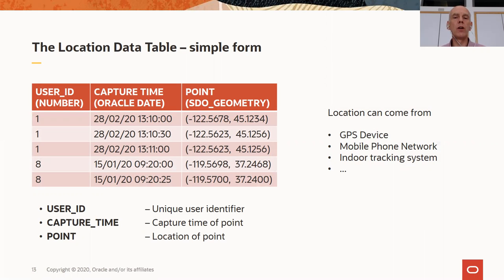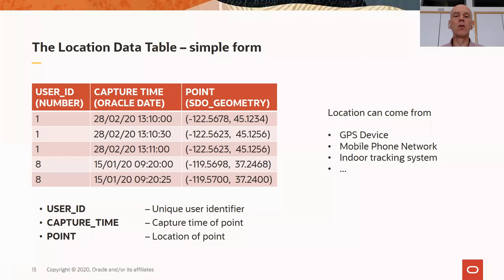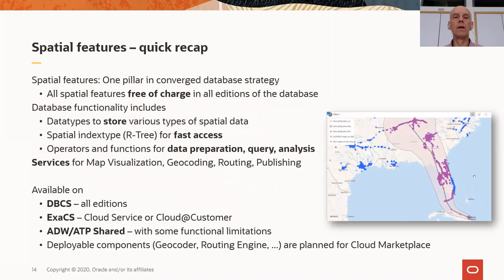As with the swiping API, we also expect an infrastructure that delivers locations in some way, shape, or form — and it ends up in a table you can access. In its simplest form, that table has a user ID column, a timestamp, and a location. The location can come from a GPS device or a mobile phone network. If you have an indoor tracking system, you could use that. You can already see the data type: that column is of type SDO_geometry.